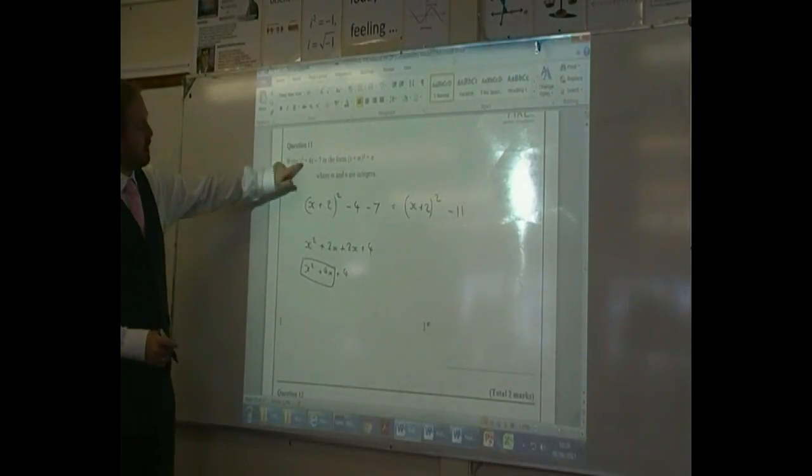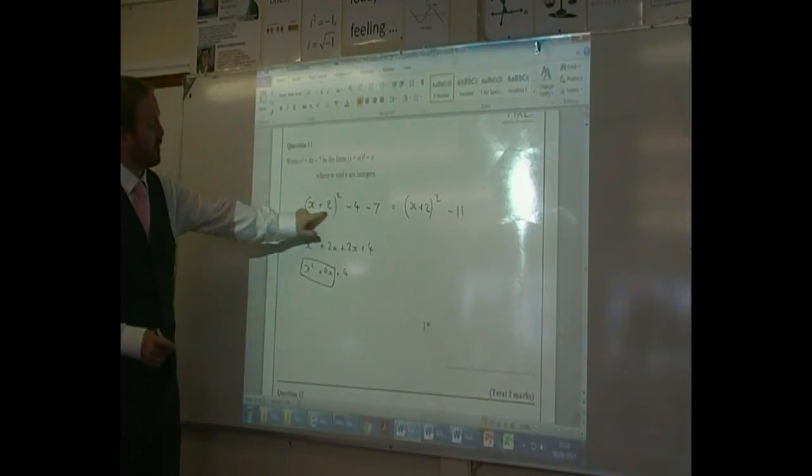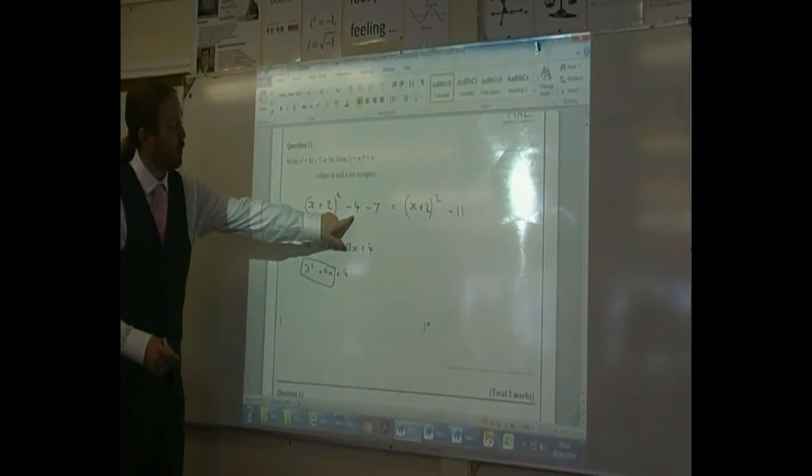Just to review that again, you half the 4 to get 2. So it's x plus 2 squared. And then you square that and take it away. So 2 squared and take it away. So it's minus 4.